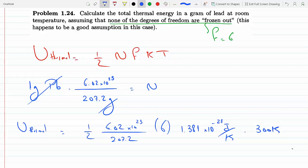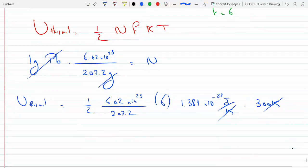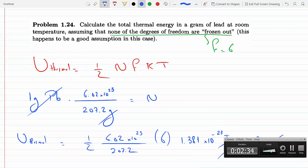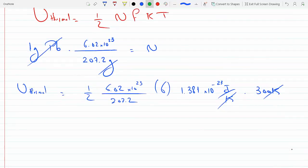So that means we have thermal energy of 36.21 joules.